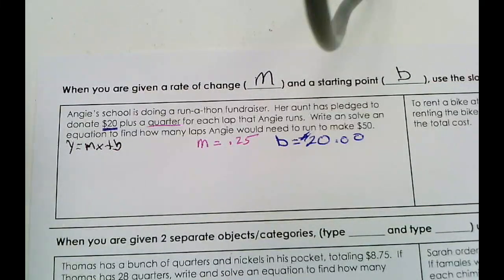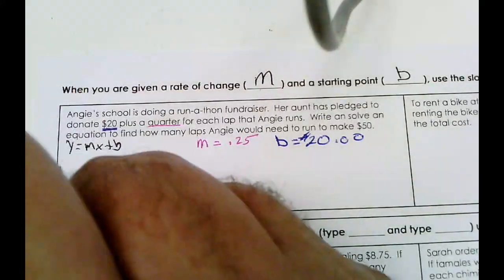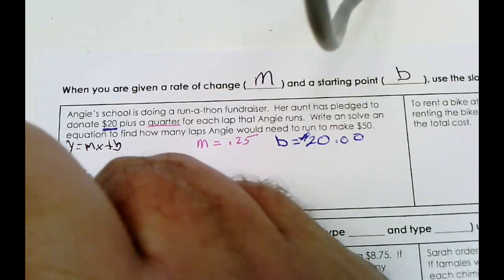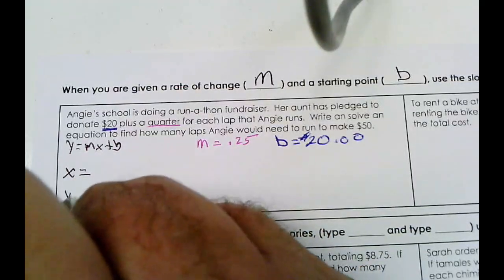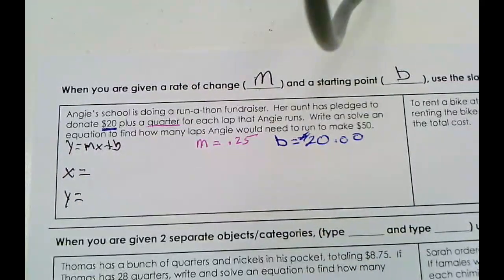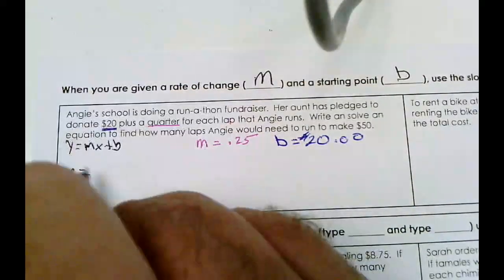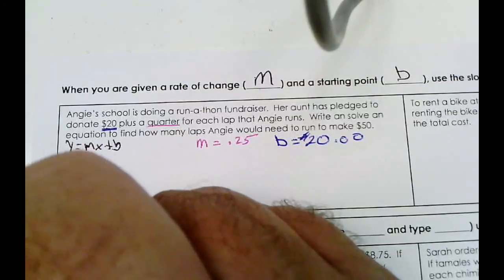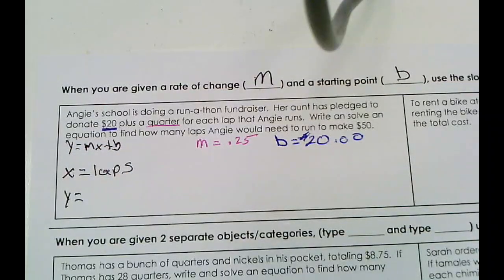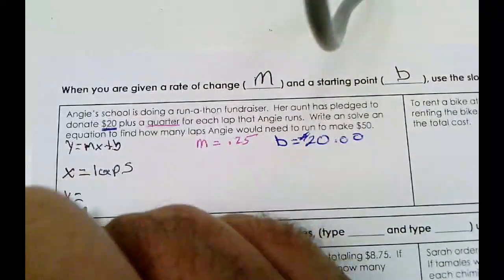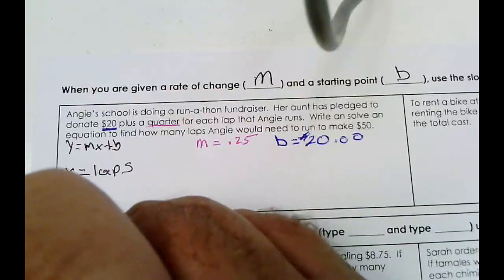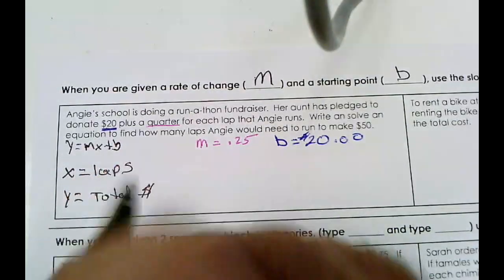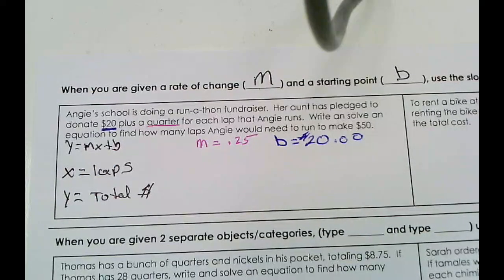Let's label our variables. Our x is the number of laps that she's going to run, and our y is the total amount of money that she is going to earn.